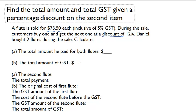Let's start off with part A. We know for the first flute, he had to pay $73.50. However, for the second flute, we know that he also got a discount of 12%. So let's first calculate the price of the second flute.